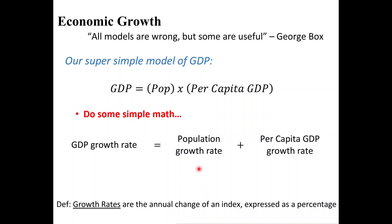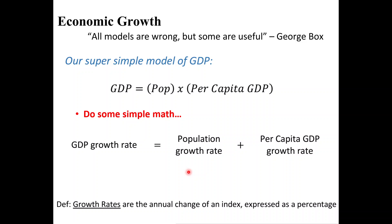GDP growth rate can be broken down into two components: population growth rate and per capita GDP growth rate — that is productivity per person. We have mathematically shown that this is true. Malthus and Ehrlich could still be correct if there's a relationship between these two — meaning as population growth rate increases, per capita GDP growth rate has to decrease. So in order for the Malthusian hypothesis to be true, as population growth rate increases, per capita GDP growth rate must decrease, meaning that on average, people become less productive as population goes up.